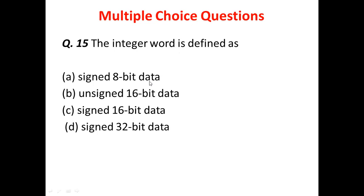Question 4: An integer word is defined as what? Option A is signed 8-bit data, Option B is unsigned 16-bit data, Option C is signed 16-bit data, and Option D is signed 32-bit data. The answer is signed 16-bit data.